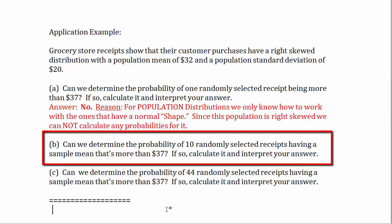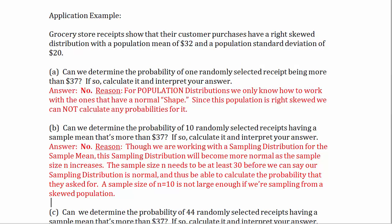The question is whether all the possible sample means from repeated sampling — where each sample is of size 10 — will cluster around the population mean closely enough to take on a normal distribution, even though the population we're sampling from is right-skewed. The answer is no. The sampling distribution becomes more normal as n increases, and the sample size needs to be at least 30. A sample size of 10 is not large enough when sampling from a skewed population.